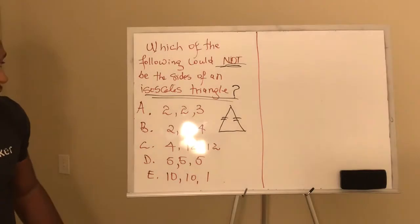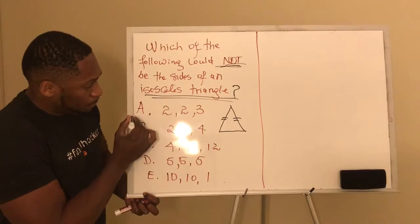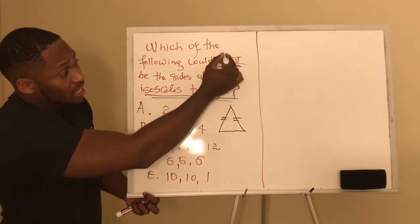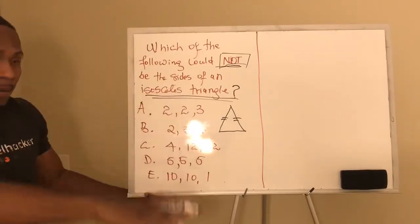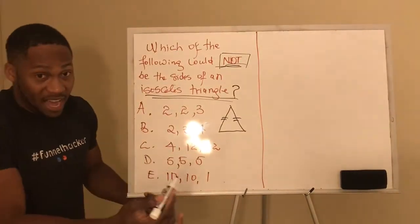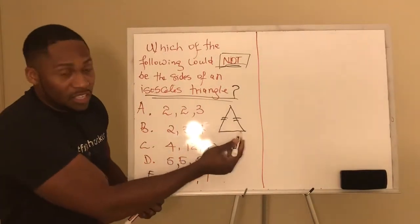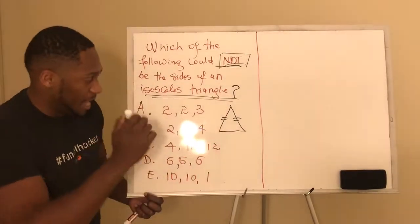Now that we have the definition of an isosceles triangle, let's see which one could not be the answer. That means four of them satisfy the definition of an isosceles triangle, one of them is not.